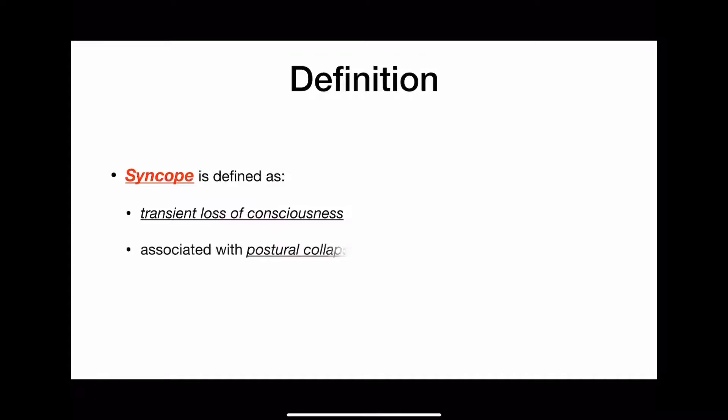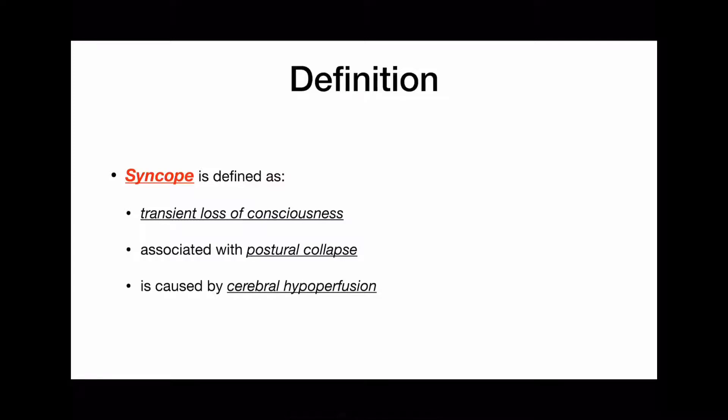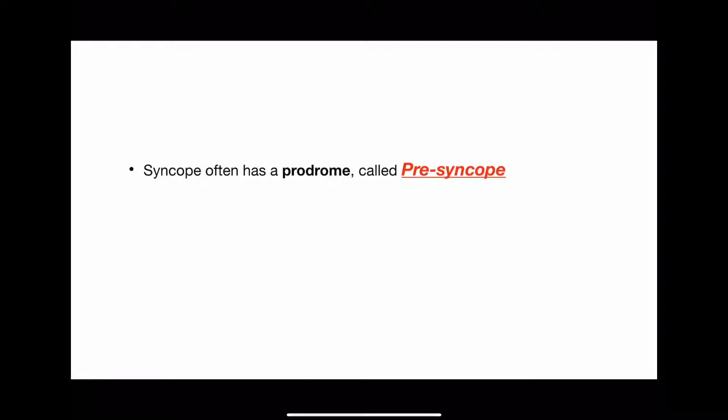Syncope is defined as transient loss of consciousness. It is associated with postural collapse and is caused by cerebral hypoperfusion. Syncope can be a benign faint or it may be due to a potentially life-threatening condition. In most cases, a detailed history and physical examination will help you come to a diagnosis. Syncope often has a prodrome called presyncope.